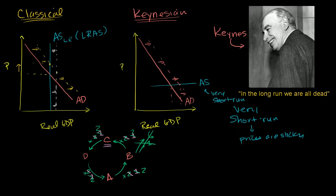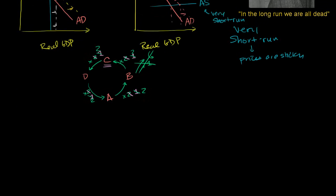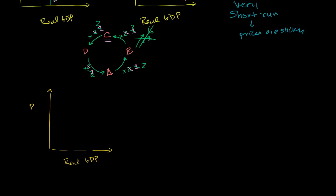Now the correct answer is, with all things, is probably something in between. Probably a more accurate model is something like this. So let's draw, so this is price. This is real GDP right over here. And we'll still draw our downward sloping aggregate demand curve. Aggregate demand curve.